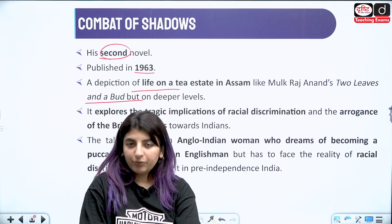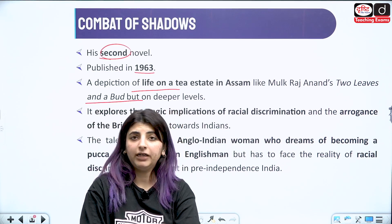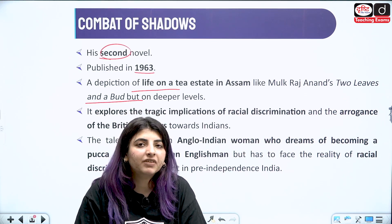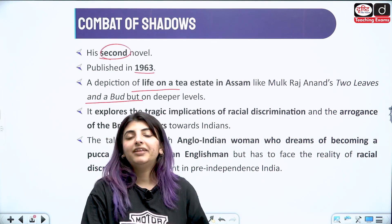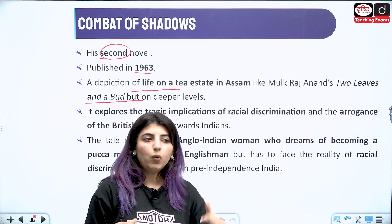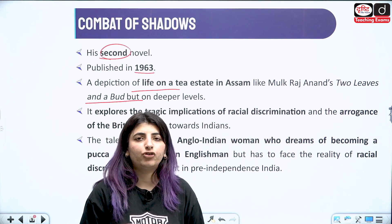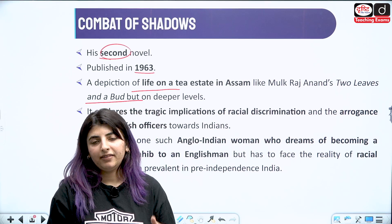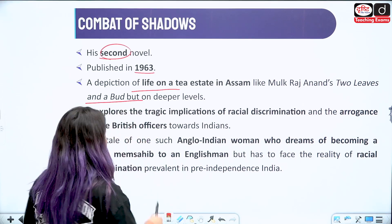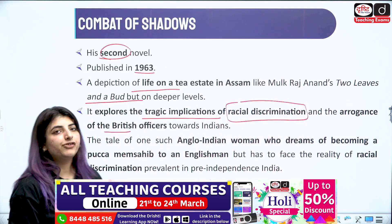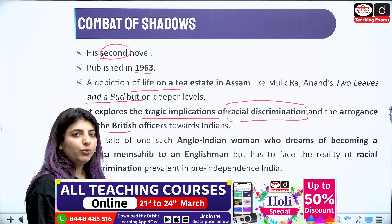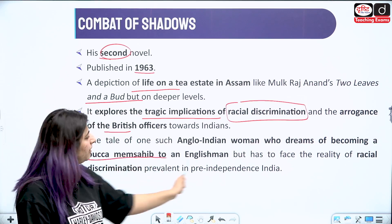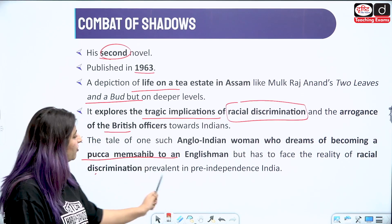As discussed in the Mulk Raj Anand video, Two Leaves and a Bud deals with the disparity and discrimination that the British had towards Indians and the way they exploited them. Here in Combat of Shadows, the theme of racial discrimination is so beautifully described — the tragic implications of racial discrimination and the arrogance of British officers towards Indians, how they thought it was easy to use and throw the Indians. It's the tale of an Anglo-Indian woman who dreams of becoming a proper mem-sahib to an Englishman but has to face the reality of discrimination prevalent in pre-independence India.